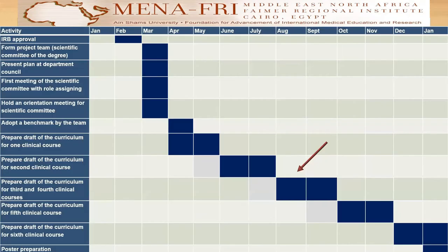This is the timeline of my project. What was expected to be done by the milestone we're in in August was: number one, forming a project team, which is the scientific committee of the degree. This was done.